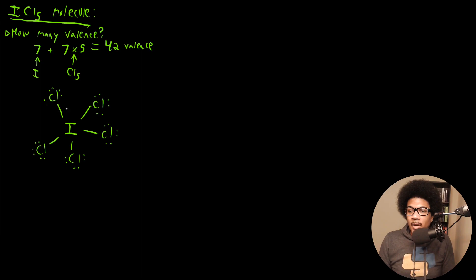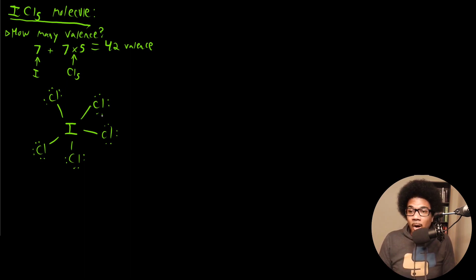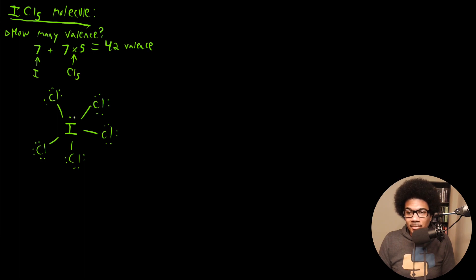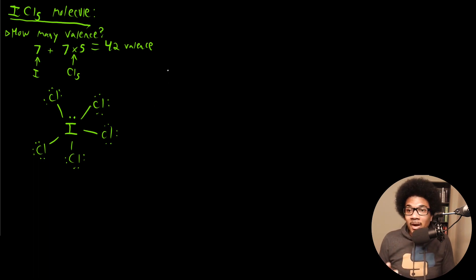We fill in the lone pairs on all five chlorines. At that point we've accounted for 8 × 5 = 40 valence electrons. We have 2 more valence electrons to account for. Since all the chlorines already have their octets satisfied and iodine is already accommodating an expanded octet, we add that remaining lone pair to the central iodine. So now we have a central atom with a lone pair.